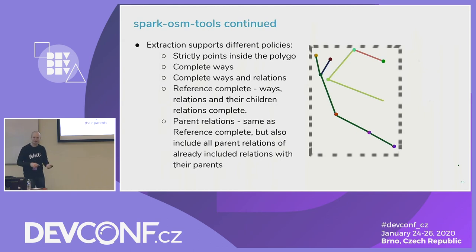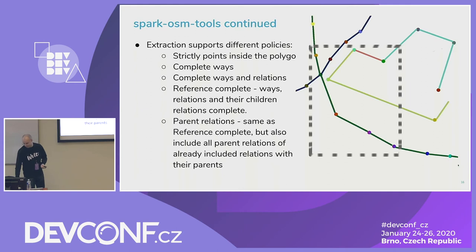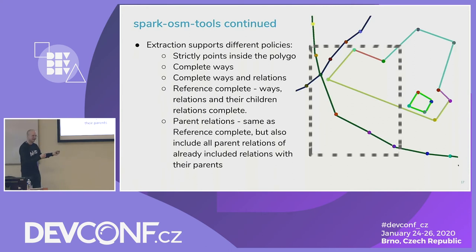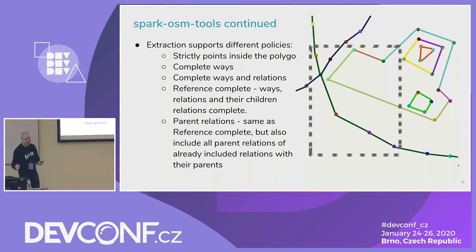But those ways will be incomplete — a way may go outside the bounding box. Many tools provide 'complete ways and relations': when you read the file a second time you know which ways and relations were included, you read the needed nodes, and make it complete. Same for relations, but just two passes. Now with all the data in RAM you can build a hierarchy of relations, fill relations with their children, and the data will be reference-complete.